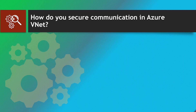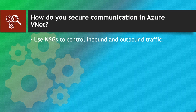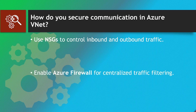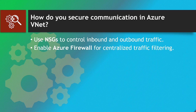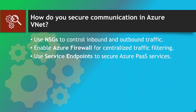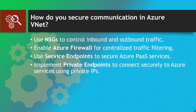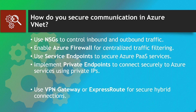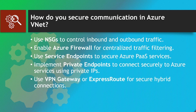How do you secure communication in Azure VNet? Use NSGs to control inbound and outbound traffic. Enable Azure Firewall for centralized traffic filtering. Use service endpoints to secure Azure PaaS services. Implement private endpoints to connect securely to Azure services using private IPs. Use VPN Gateway or ExpressRoute for secure hybrid connections.